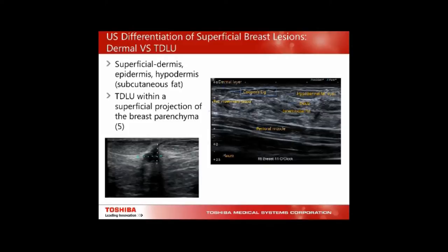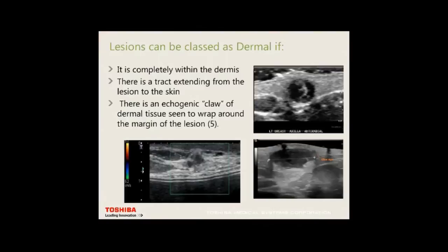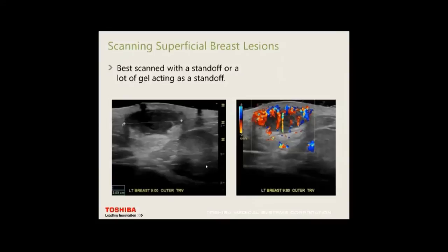Differentiating superficial breast lesions: we differentiate lesions like epidermoid cysts and sebaceous cysts in the hypodermal or epidermal layer from those extending up from the TDLU. Sometimes they look within the hypodermal layer but are actually extending up from below and are breast cancers. Lesions can be classed as dermal if completely within the dermis or if there's a tract extending from the lesion to the skin. Using a standoff or lots of gel, you can see the echogenic claw sign coming around — unlike cancers, which show disruption through the mammary fascia.